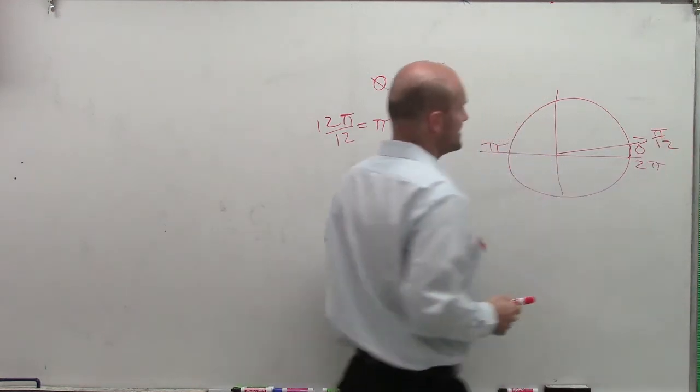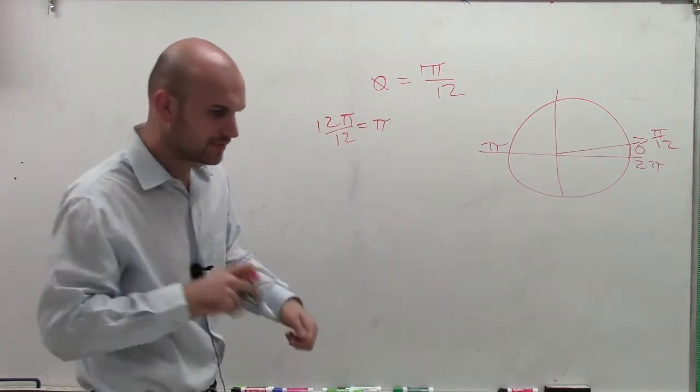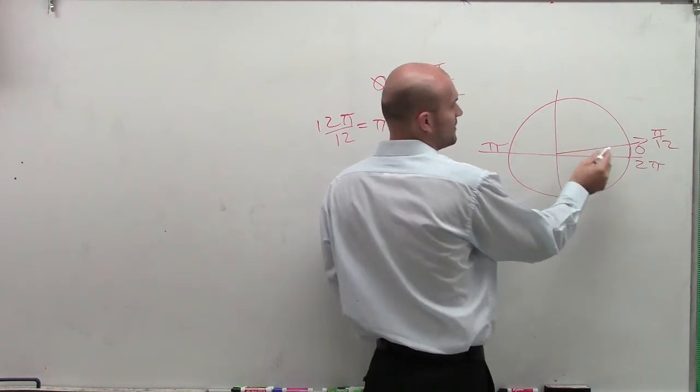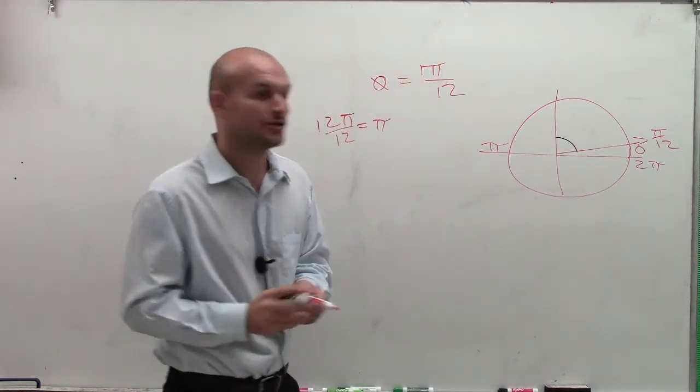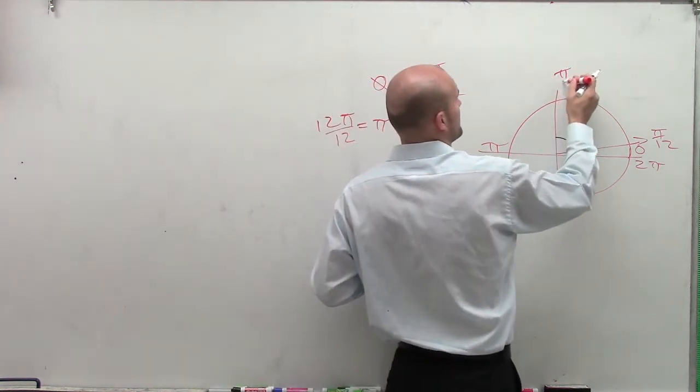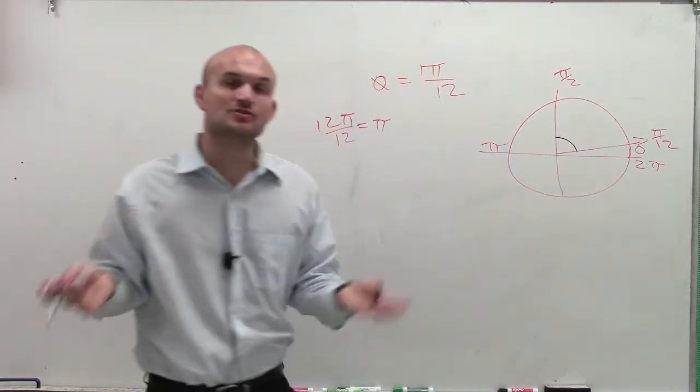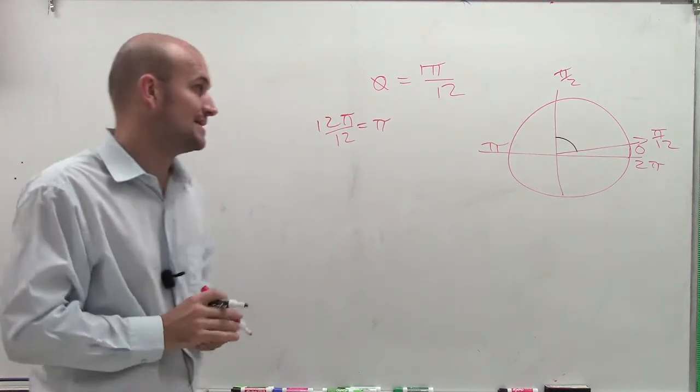So to find the complementary angle, remember, the complementary angle is going to be the angle, when added to pi over 12, that's going to make pi over 2. Or back in the day, we used to say the two angles that add up to give you 90 are going to be complementary.